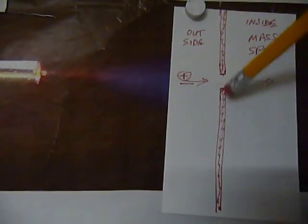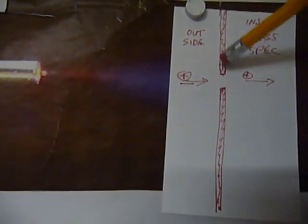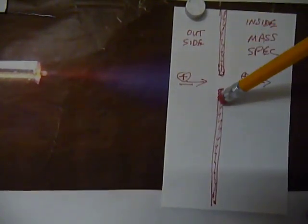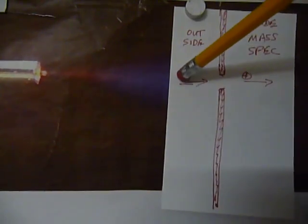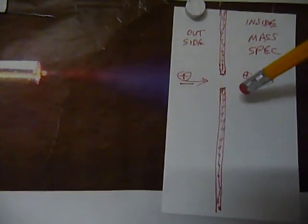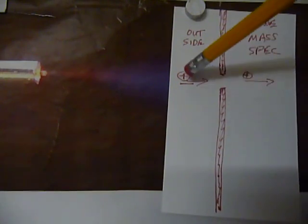And then, typically, there's an opening into the mass spec. That opening has to have some sort of a charge in order to prevent the ions from grounding out and losing their charge as they're making their way into the mass spec.